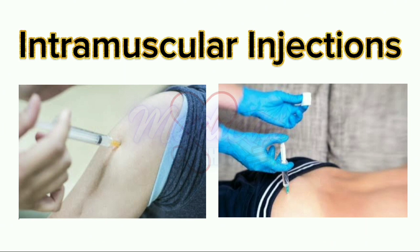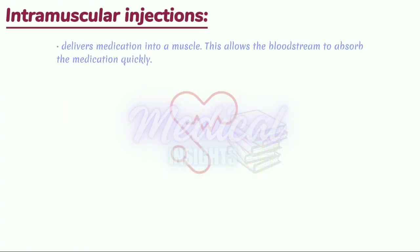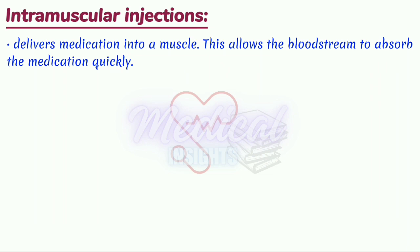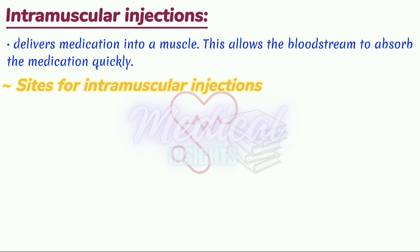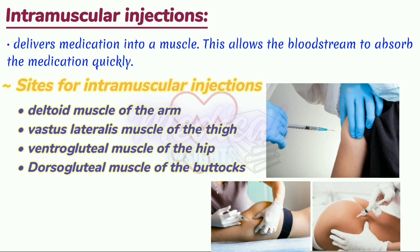Intramuscular injections deliver medication into a muscle, which allows the bloodstream to absorb the medication quickly. Some common sites for intramuscular injection include the deltoid muscle of the arm, vastus lateralis muscle of the thigh, ventrogluteal muscle of the hip and dorsogluteal muscle of the buttocks.